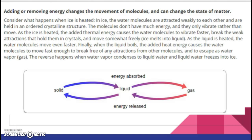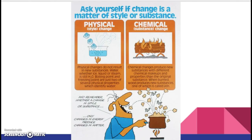We talked about how when energy is absorbed — endothermic — or energy is released — exothermic — we have a phase change or a physical change. Sometimes energy being added or removed results in a physical change; sometimes it results in a chemical change that makes a new substance. For this lesson, we're focusing on whether the change is physical or chemical. Ask yourself: is the change a matter of style or substance? Physical change is a style change — physical changes do not result in new substances. Water, whether ice, liquid, or steam, is still H2O. Boiling point and freezing point are just two of several physical properties which identify water. Chemical change is a substance change — chemical changes produce new substances with different chemical makeups and properties than the original.